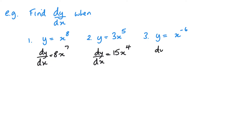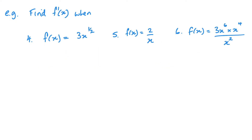Question 3: same thing again. Multiply by the power — so multiply by minus 6 — and take one away from the power, so we get minus 7 as the new power. Now, looking at another three examples: f(x) equals 3x to the power of a half. So f'(x) — we need to multiply by the power, so a half multiplied by 3 gives 3 over 2, and then take one away from the power.